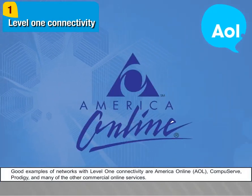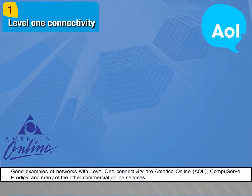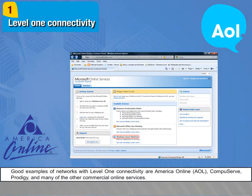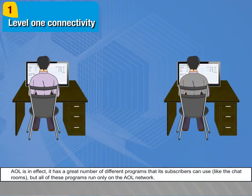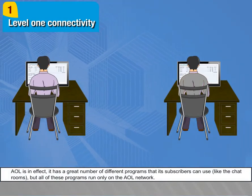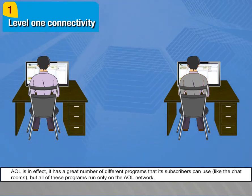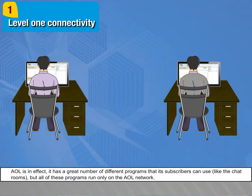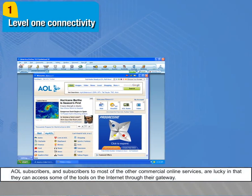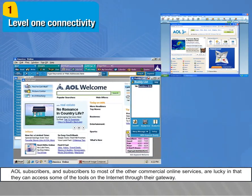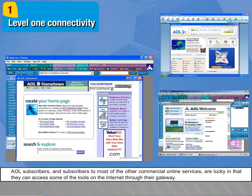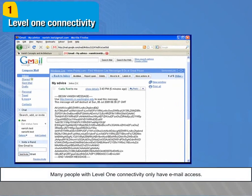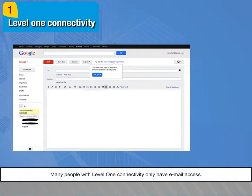Good examples of networks with Level 1 connectivity are America Online (AOL), CompuServe, Prodigy, and many other commercial online services. AOL has a great number of different programs that its subscribers can use, like chat rooms, but all of these programs run only on the AOL network. AOL subscribers can access some tools on the internet through their gateway, but many people with Level 1 connectivity only have email access.